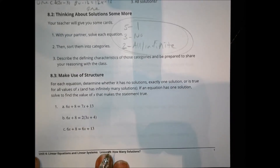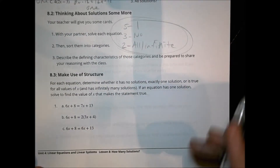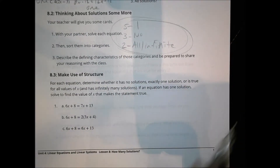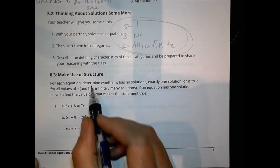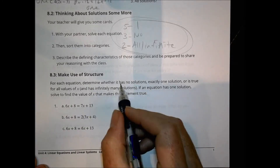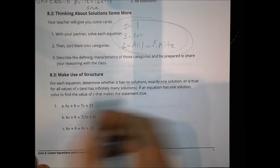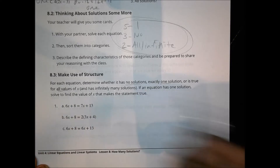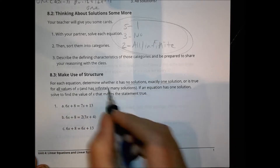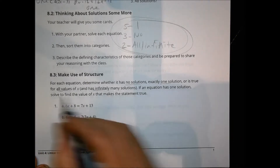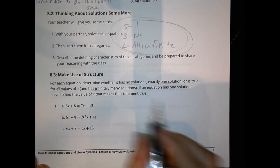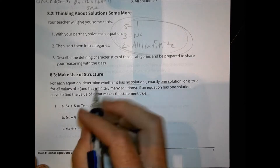Let's take a look at section three. For each equation, determine whether it has no solutions, one solution, or is true for all values — meaning infinite solutions. If it has one solution, solve it to find the value of x that makes it true.